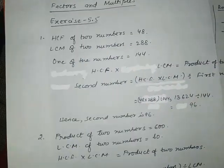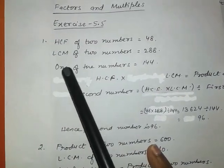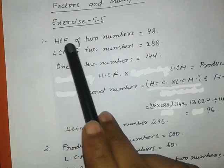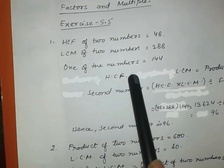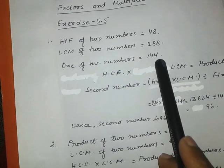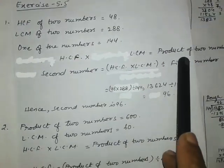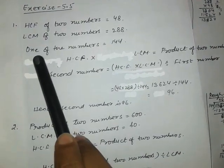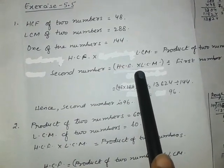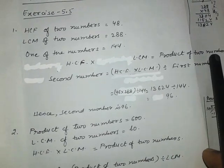So if we know the product and need to find one number, we divide. HCF of two numbers is 48, LCM is 288, and the first number is 144. Since HCF × LCM equals the product of two numbers, the second number equals HCF × LCM divided by the first number.